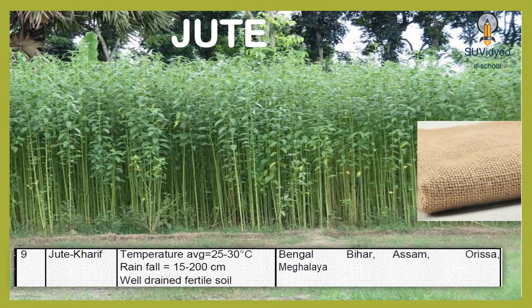Jute is another fiber crop. It is also grown in the Kharif season in India. It requires an average temperature of 25 to 30 degrees Celsius and rainfall between 150 to 200 cm. It grows well in well-drained fertile soil. In India, jute is grown in West Bengal, Bihar, Assam, Odisha and Meghalaya.